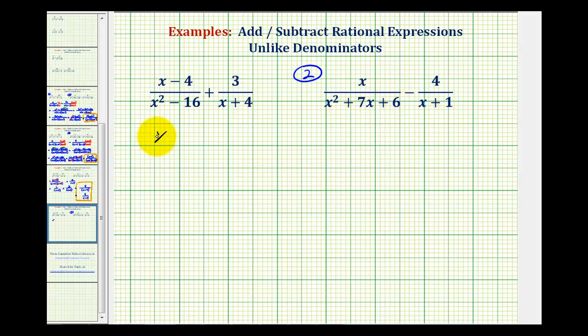So we'll have x all over two binomial factors. The first terms will be the factors of x squared, which are x and x. The second terms will be the factors of six that add to positive seven. That will be positive six and positive one. So we have x plus six here and x plus one here. We'll leave some space, minus four over a factor of x plus one.